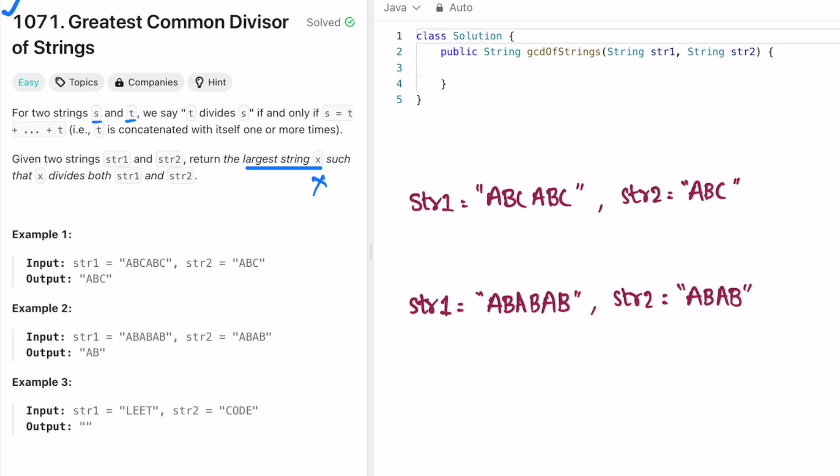So what is the common string among both the strings which divides them equally so that you can form the greatest common divisor of that string? Let's take example one. Here we are given string one as ABC ABC and string two as ABC. And here you can see string one will be made up of multiple ABCs which is string two.